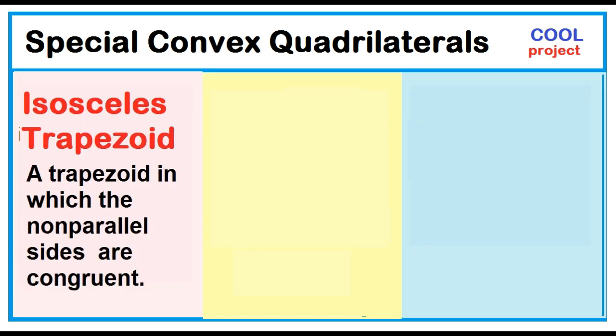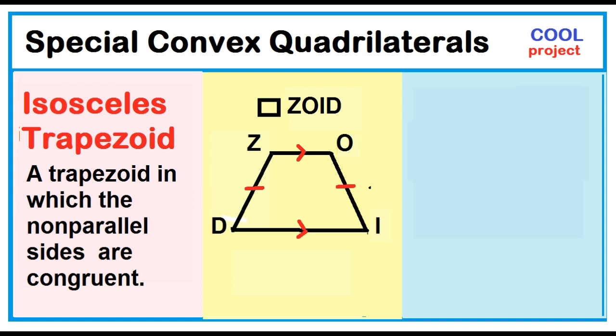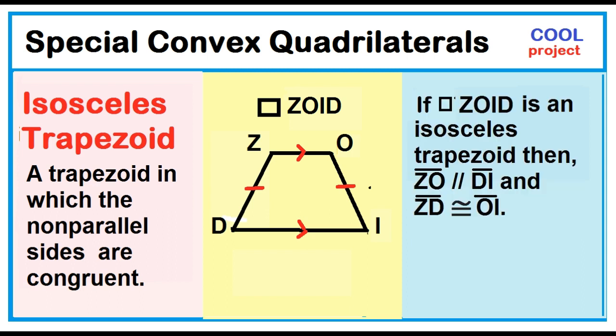An isosceles trapezoid is a trapezoid in which the non-parallel sides are congruent. Quadrilateral ZOID has a pair of opposite sides parallel and the non-parallel sides are congruent. If quadrilateral ZOID is an isosceles trapezoid, then segment ZO is parallel to segment DI, and segment ZD is congruent to segment OI.